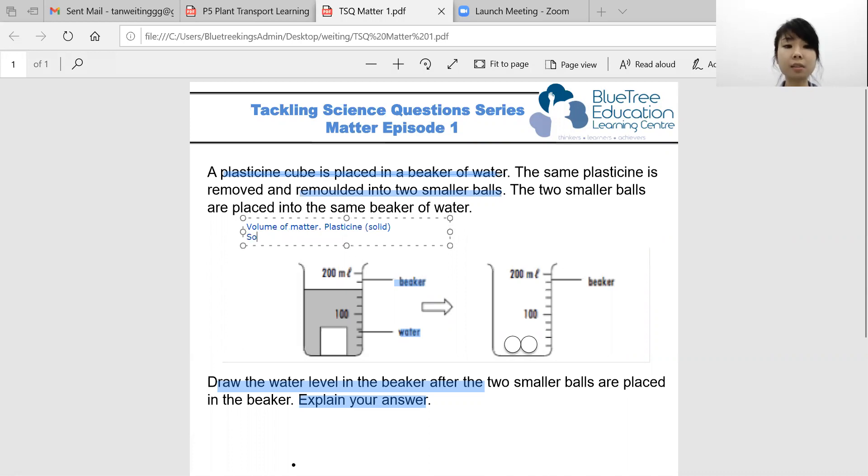If you recall, solids have a definite volume. So despite being remolded, the volume actually remains the same, and hence the water level will also remain the same. So in the second beaker, I'm going to go forth and draw the water level, being identical to the one in the first beaker.